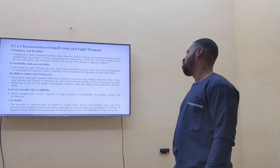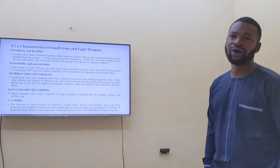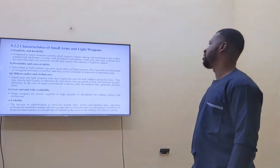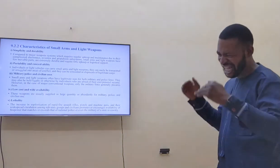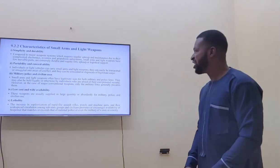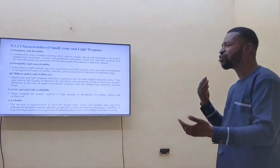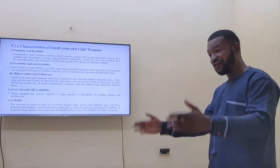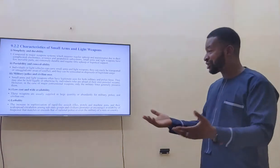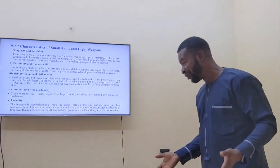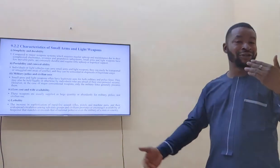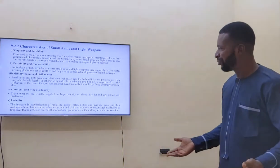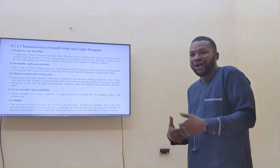What are the characteristics of small arms and light weapons? The first characteristic is the fact that they are simple and durable. They don't require many resources to maintain. If you have a gun, you just keep it somewhere secure — you don't need a lot of effort to maintain it. They are also portable and concealable.